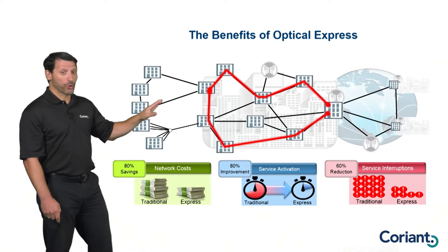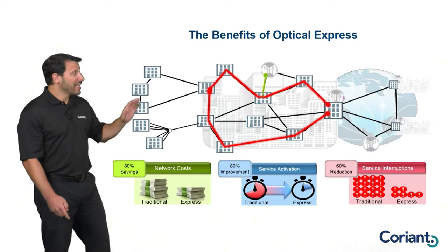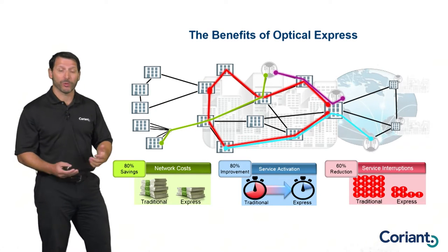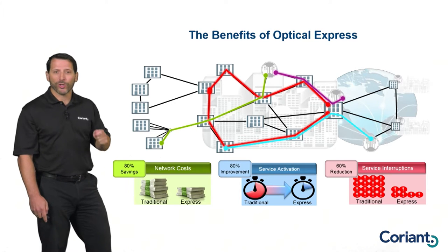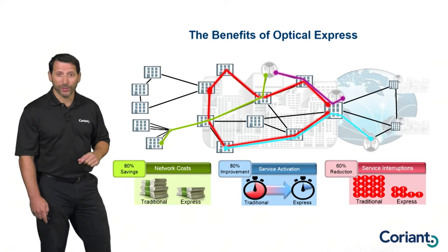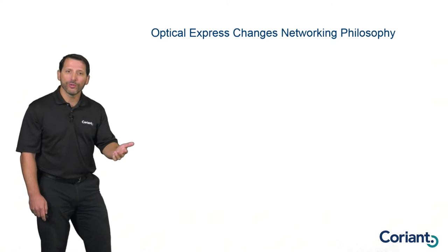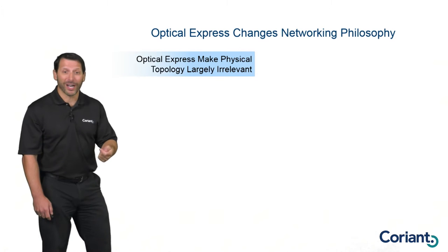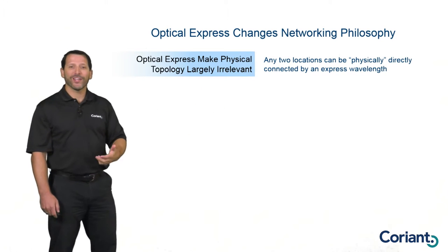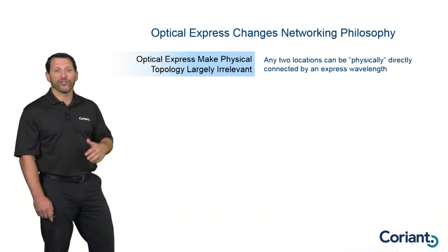These are the three primary aspects and benefits of Optical Express. Beyond building the network as you do today, there's an even more profound impact: Optical Express can change the fundamental philosophy used in architecting the network. What Optical Express really does is fundamentally eliminate or minimize the impact of physical topology in terms of where you put your resources. It enables you to think about every location in the network as logically adjacent to every other — essentially, everything is only one hop away.